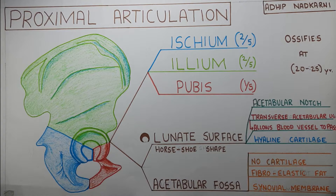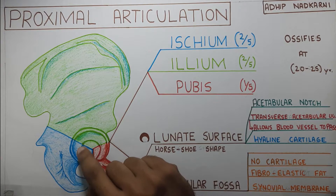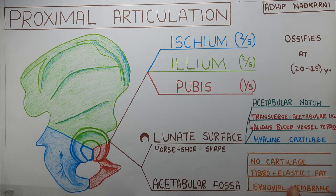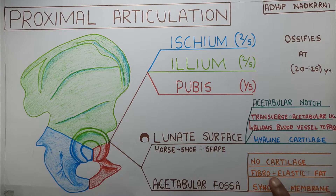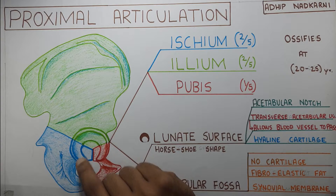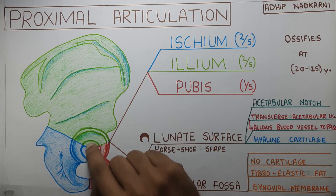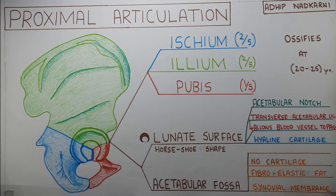Moving to the acetabular fossa: it does not have any cartilage — this is a very important point. Instead, there is a fibroelastic fat layer present in your fossa. There is also a synovial membrane which produces synovial fluid in your acetabulum and lubricates your hip joint.